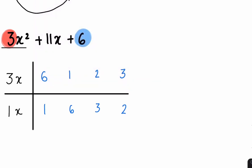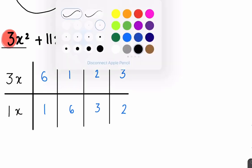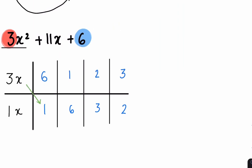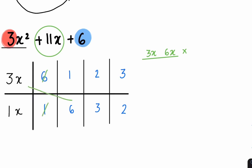Now that you've completed your grid, all you have to do is cross multiply until you find the column that works. Starting with the first column: 3x multiplied by 1 gives you 3x, and 1x multiplied by 6 gives you 6x. Can you use these two terms to make 11x by adding or subtracting? No. Therefore, this column doesn't work. Go to the next column — again, these terms can't be added or subtracted to make 11, so this column doesn't work either.